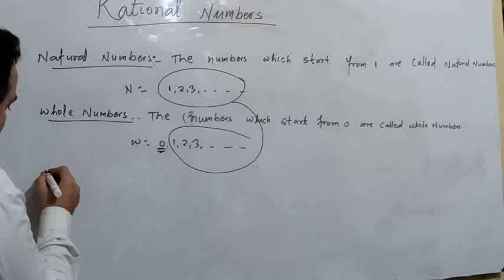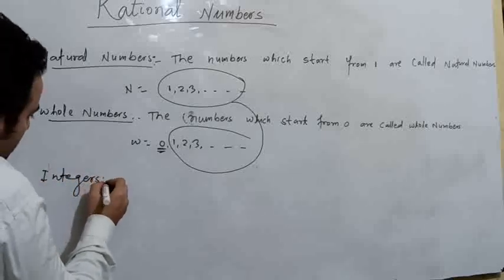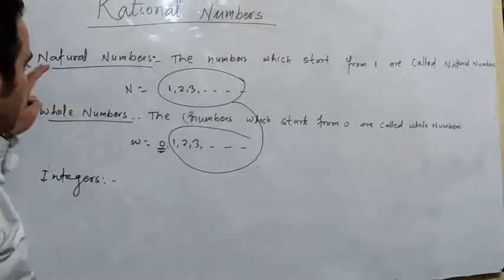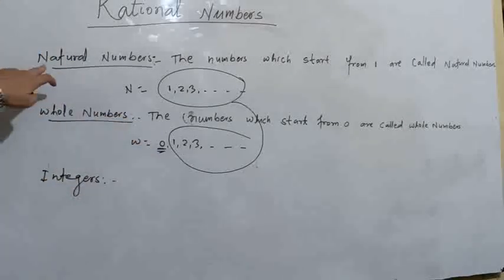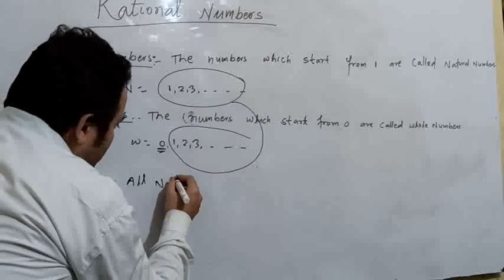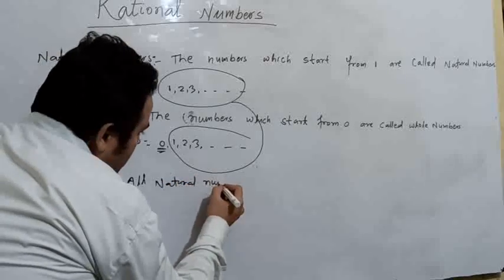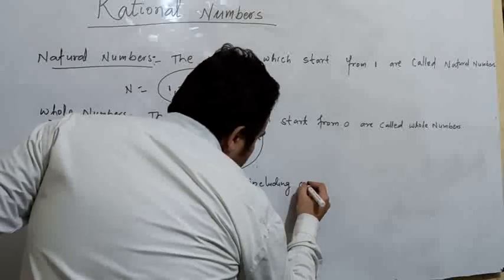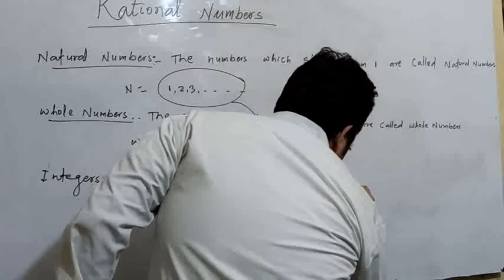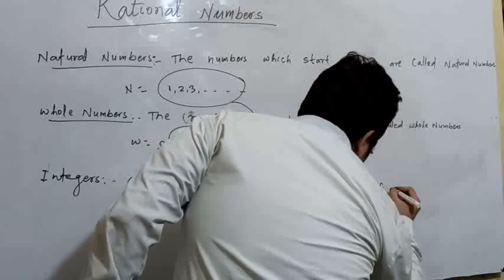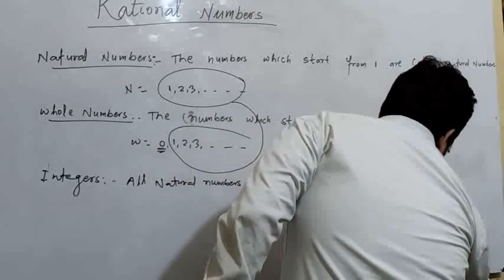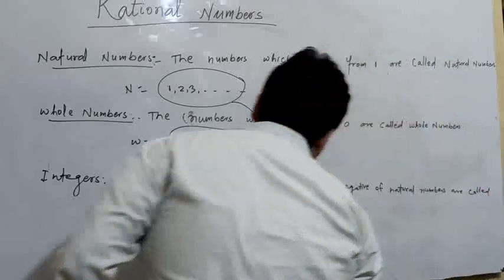Next topic is integers. About integers: all the natural numbers, including 0, and the negatives of natural numbers are called integers.